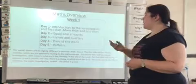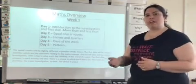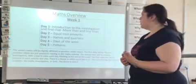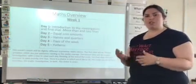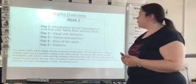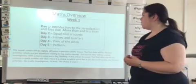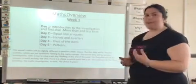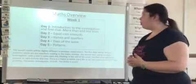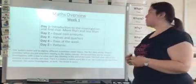We're looking at day one, more and less than. Day two is equal coin amounts, looking at our money. Day three, halves and quarters. We should be really good at our halves and quarters now. Day four, days of the week. And day five, looking at patterns which we've already looked at before. We're making sure that we're going back and remembering all those things that we've done this block.